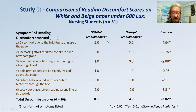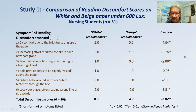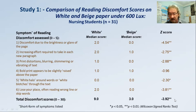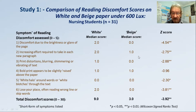This means that we have median scores here instead of means, which I much prefer as means can be misleading. The statistical score — the Z score instead of a T score — showed that five of the six symptoms and the total discomfort score all reduced significantly under the same lighting when the students compared reading the same text from the non-white paper.